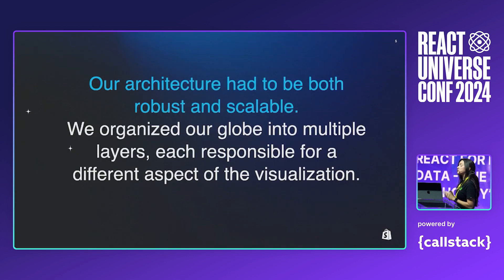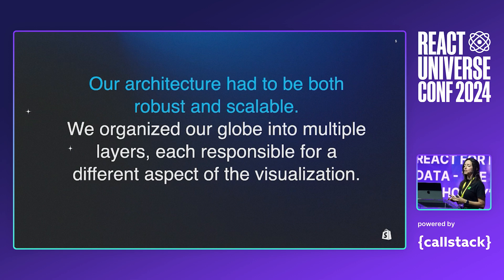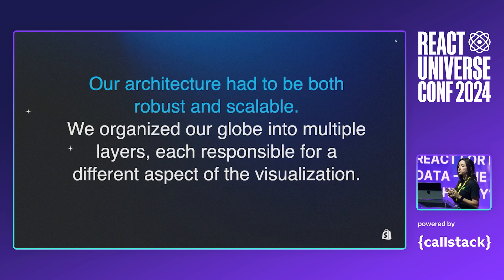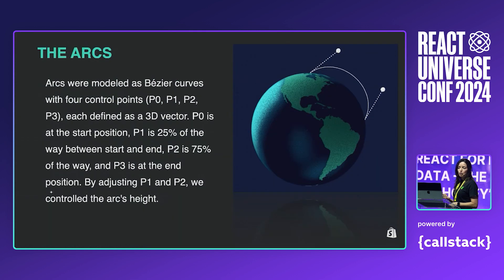Handling a global data set with thousands of real-time transactions meant our architecture had to be both robust and scalable. We organized our globe into the layers I just mentioned, each responsible for a different aspect of the visualization. To start with the arcs — as I mentioned, they were meant to represent a transaction. We used Bézier curves, Bézier curves to be more precise, with control points calculated dynamically. This allowed us to animate the arcs in real time, showing orders as they were happening.